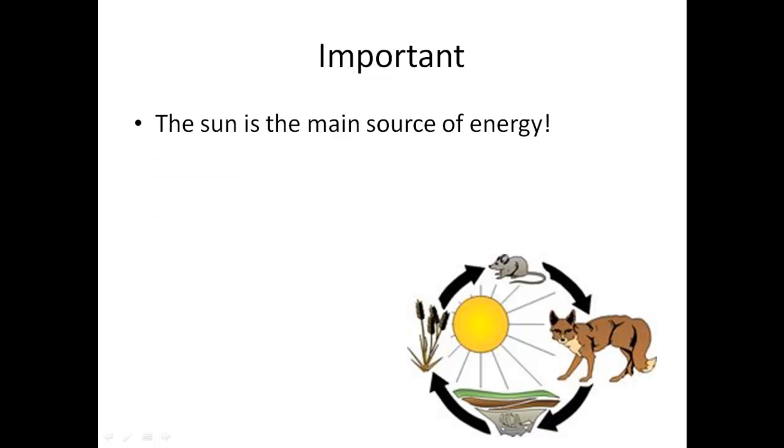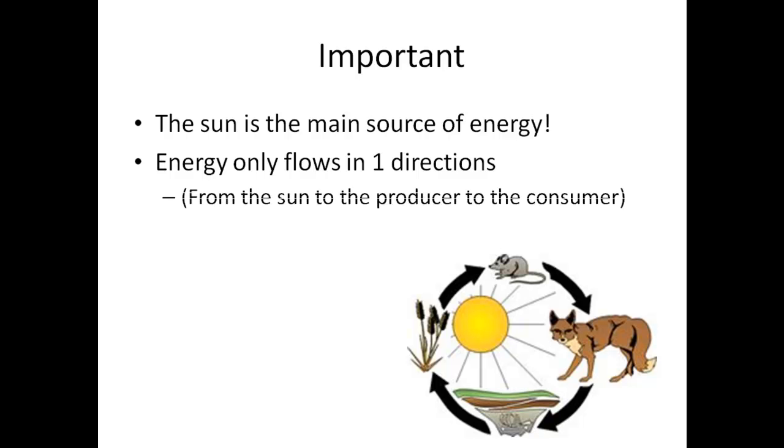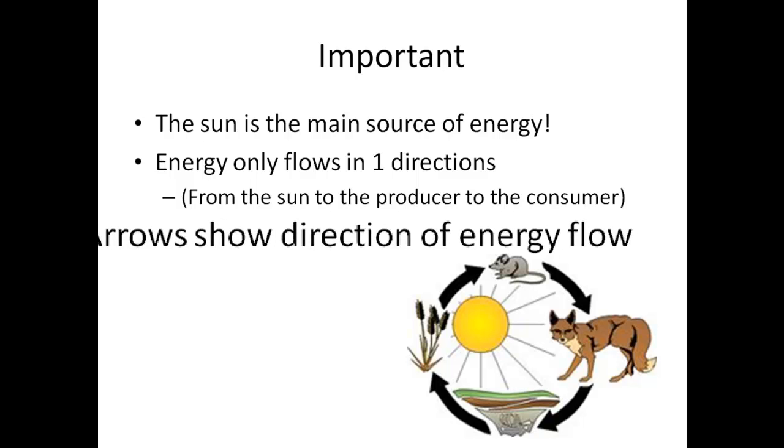In fact, the sun is the main source of energy. Energy flows in one direction, from the sun to the producer. The arrows in our food chains and food webs show the direction of energy flow.